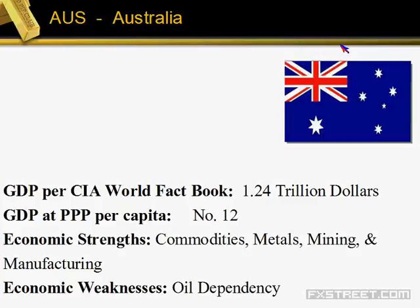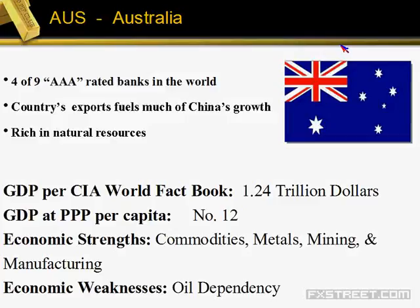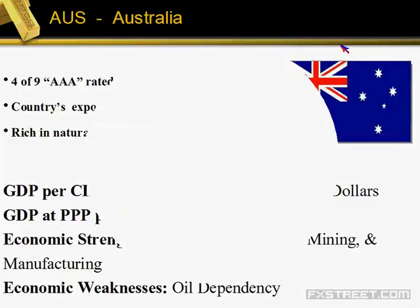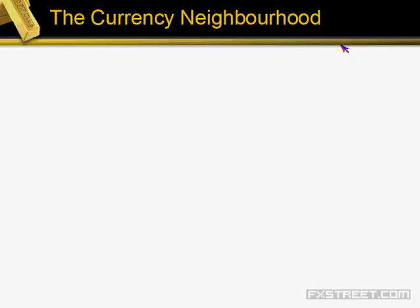Australia is the economy that has truly powered China and made a huge difference. Where China struggles, you will see Australia take a dip. If you see good news out of China, Australia does well — there's a clear connection there. Compared with New Zealand, Australia dropped about 450 pips in that same period. Australia also has four of the nine AAA-rated banks in the world and is very rich in natural resources.